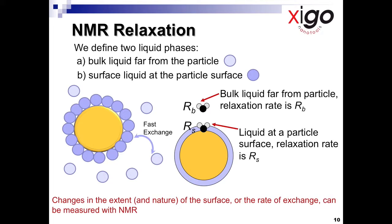The difference between these relaxation times can be very large — orders of magnitude. The changes in nature and extent of the surface, in other words the particle size, particle shape, particle morphology, particle surface chemistry, or even the rate of exchange of the liquid molecules, can all be measured by probing using NMR relaxation itself.